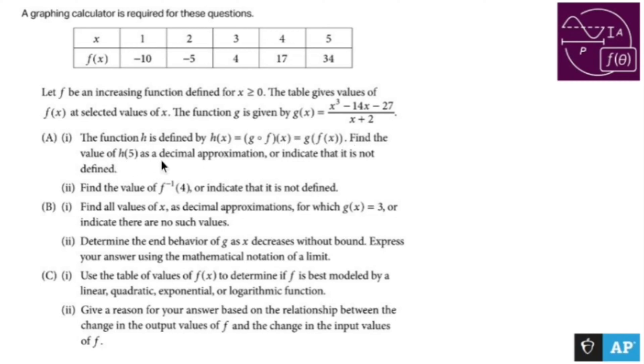Find the value of h(5) as a decimal approximation. So part A, let's find out what h(5) is. Well, h(5) is the same thing as g(f(5)). So g(f(5)), and f(5) according to this picture up here, f(5) is going to be 34. So now I need to find out what g(34) is. So h(5) is the same thing as g(34).